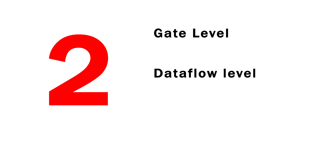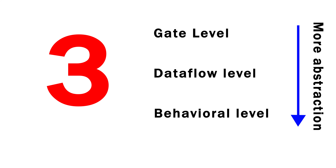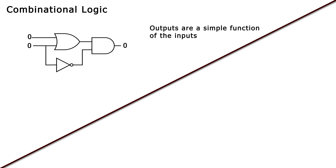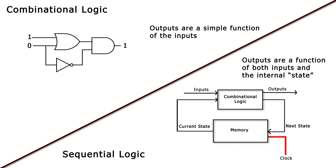To recap, we've talked about the three different ways to write code in Verilog — the gate level, the data flow level, and the behavioral level. We introduced the procedural block and the important distinction between blocking assignments, which give combinational logic, and non-blocking assignments, which give sequential logic. We also covered the fundamental difference between combinational and sequential logic. I think we've gone through some of the most important concepts in Verilog coding. Thank you for watching.